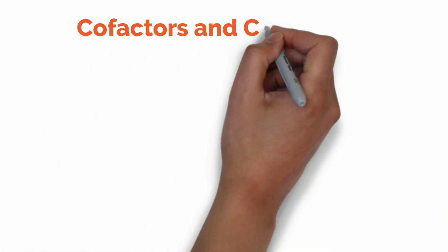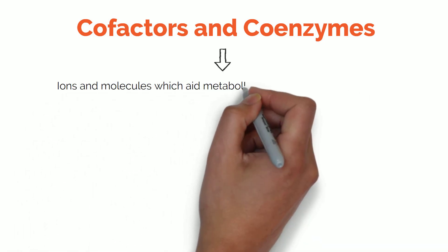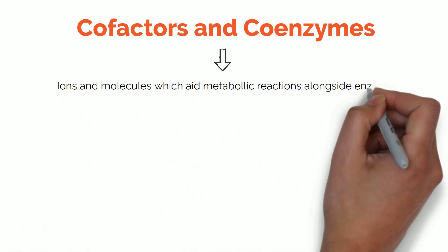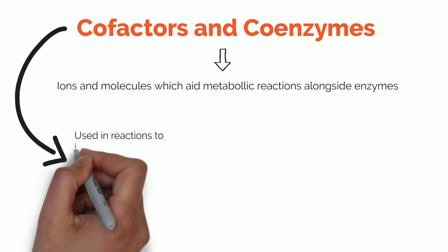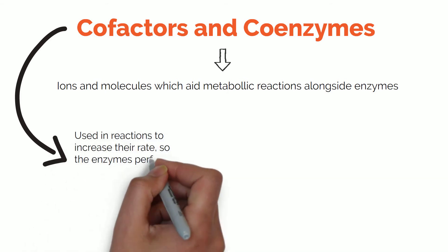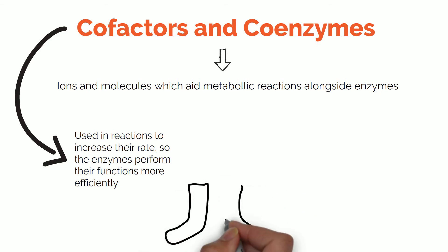Now let's talk about cofactors and coenzymes. These are ions and molecules such as magnesium, copper, iron, and zinc — the minerals covered in the last video — and they aid metabolic reactions alongside enzymes. Cofactors are used to increase reaction rates so that enzymes perform their functions more efficiently, allowing the substrate to bind to the active site. Think of it as the socks to your shoes — you need shoes to walk outside, but without socks you'll get blisters and walk much slower. The enzymes are the shoes and the cofactors are the socks.